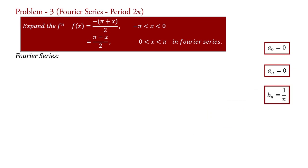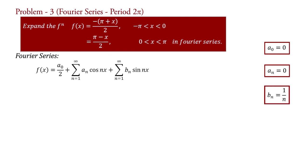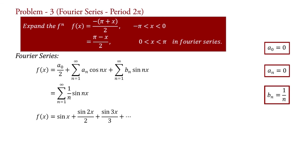Now, the formula for Fourier series is f(x) equal to the given expression. Substituting the values of coefficients a_0, a_n, and b_n — since a_0 and a_n are 0 — we get f(x) equal to summation from n equal to 1 to infinity of (1/n) sin(nx). In expanded form, taking n equal to 1, 2, 3, 4 and so on, we obtain the series: sin(x) plus sin(2x)/2 plus sin(3x)/3 plus so on. This is the required Fourier series of the given function.